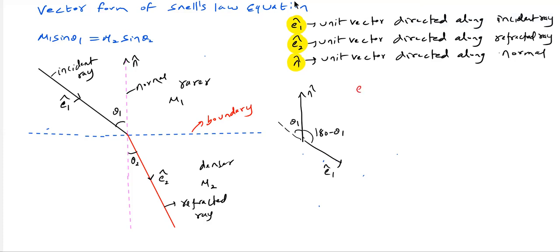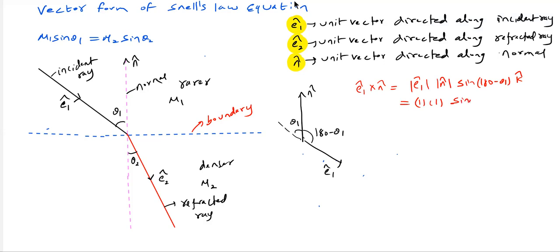Let me take the cross product: Ê₁ cross n̂. The cross product of two unit vectors gives magnitude 1 × 1 × sine of the angle between them. The angle is 180 minus θ₁, and K̂ is the unit vector directed perpendicular to the plane of the diagram. So Ê₁ × n̂ = sin(180 − θ₁) K̂ = sin θ₁ K̂.